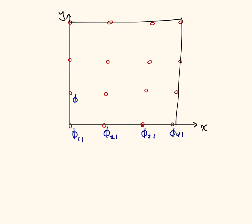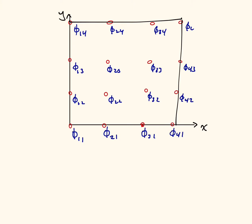The next one is phi_(1,2): first in x, second in y; phi_(2,2); phi_(3,2); phi_(4,2). We continue: phi_(1,3), phi_(2,3), phi_(3,3), phi_(4,3), and for the top row phi_(1,4), phi_(2,4), phi_(3,4), and phi_(4,4). So there are all of our different potentials that we're going to solve for.